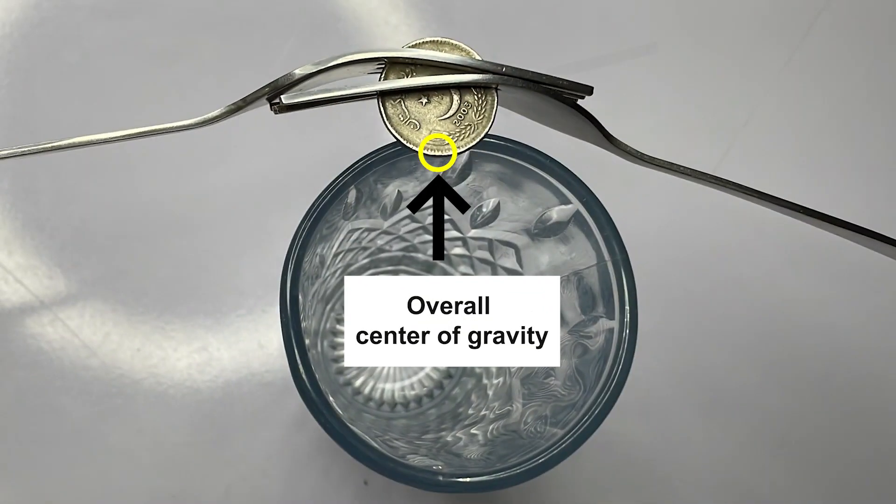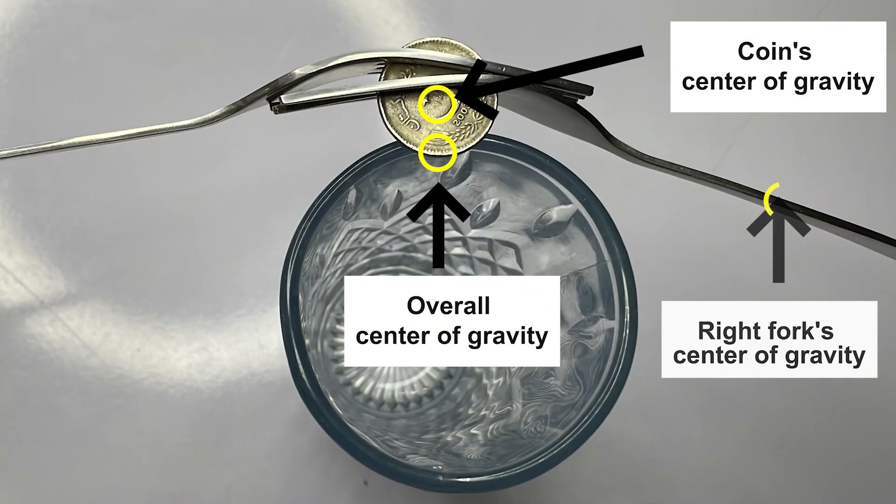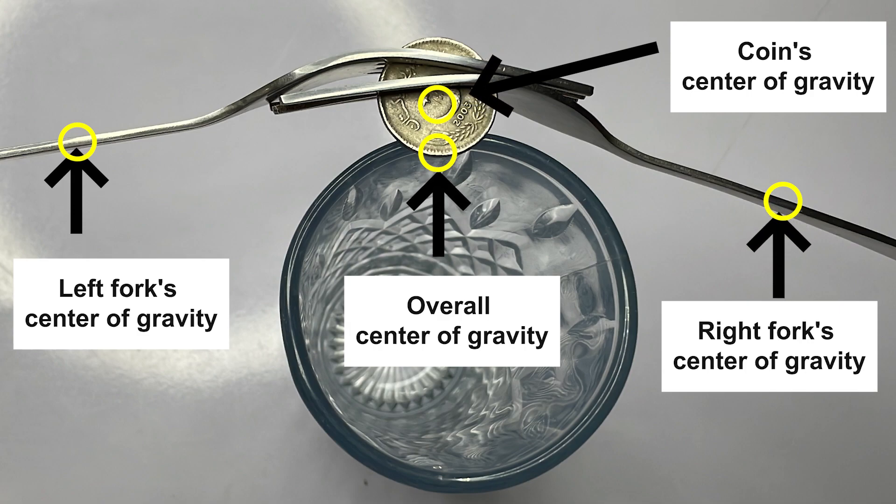The forks are placed symmetrically to have their joint center of gravity fall precisely on the same point on the x-axis. Thus, the overall center of gravity falls exactly on the point.